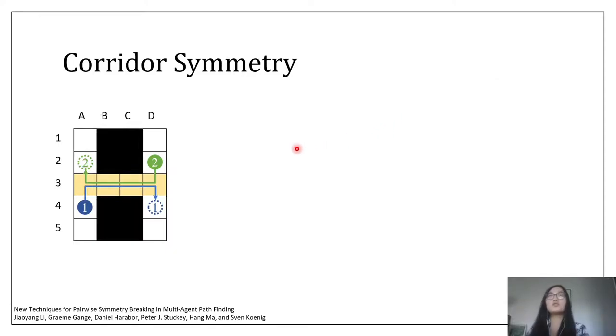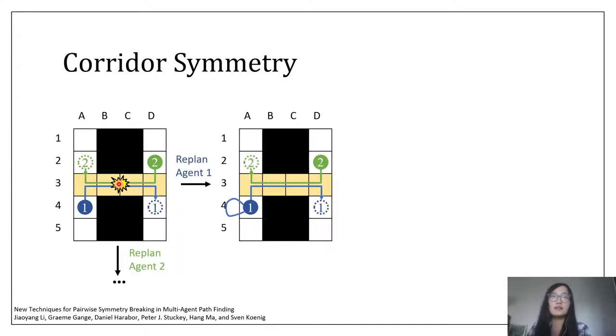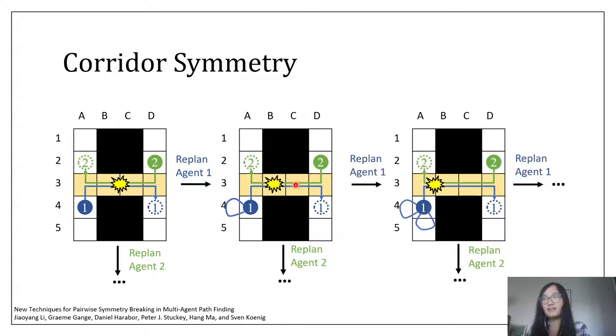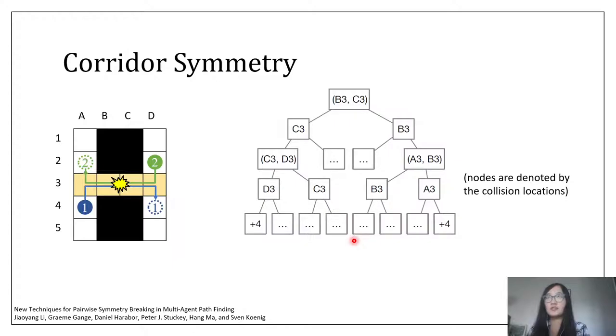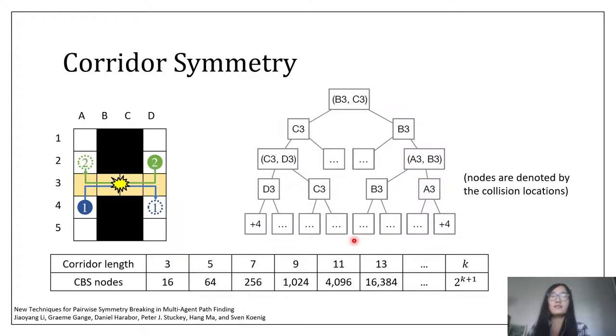In this work, we study two new types of symmetries in MAPF. The first one is corridor symmetry. It happens when two agents travel through a narrow corridor in opposite directions. In this example, the two agents collide in the middle at time step 3. If we use CBS to solve it, CBS will say that one of the agents has to avoid this colliding location at time step 3. For example, if we add a constraint to agent 1, then agent 1 will simply wait for one time step and re-enter the corridor again. Then these two agents collide at this location at time step 3. If we resolve this collision again, then agent 1 will wait for two time steps and collide with agent 2 again. So this will be the CBS tree generated eventually. And like rectangle symmetry, if the length of the corridor increases, the size of the CBS tree grows exponentially.